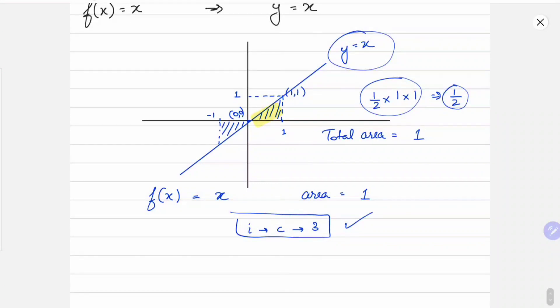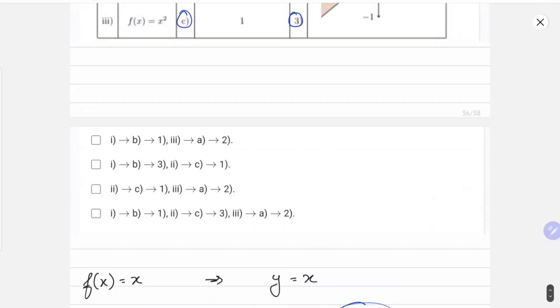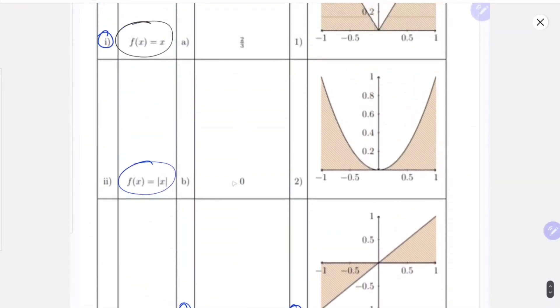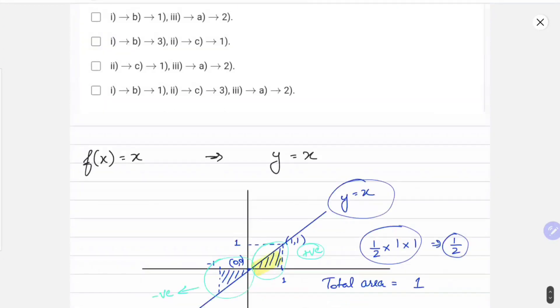With this I got to know one mistake that we did earlier. Actually, this area was negative and this was positive, so they won't add up. The area will be 0 here. 3 was correct, C was wrong, so we will have 0, B as the answer here.